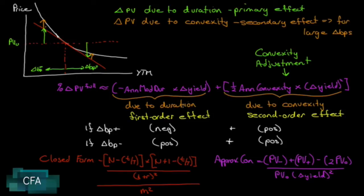This is only due to duration, called a first order effect. Here is our convexity adjustment which is one half the annual convexity—and we'll get to what that is, we'll just put a placeholder in there now.